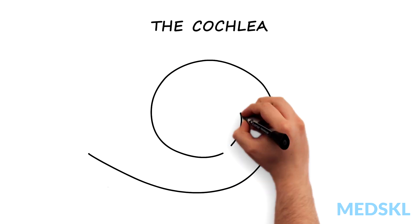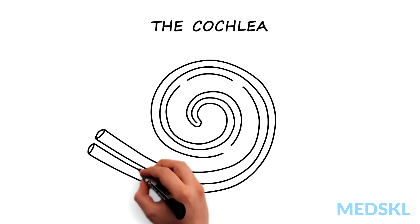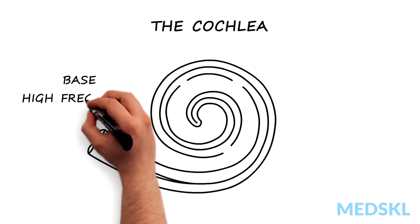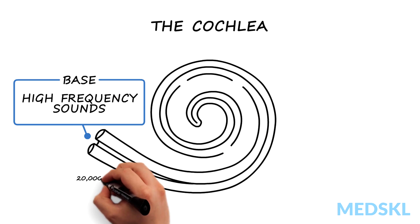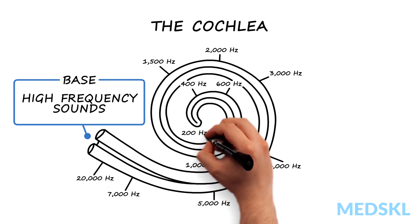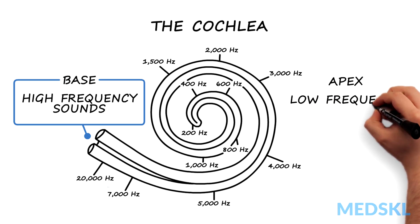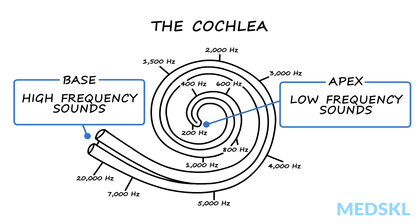The sound energy travels through the fluid of the inner ear and moves the basilar membrane in a wave that travels from the base, where high-frequency sounds are encoded, to the apex, where low-frequency sounds are encoded. The movement of the basilar membrane is amplified by the outer hair cells within the organ of Corti.